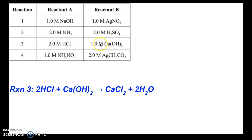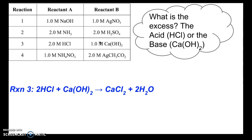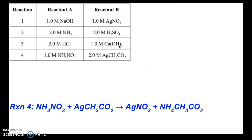For reaction 3, it's also acid-base neutralization, so ask: is the base in excess? Using mole ratios — since volumes are the same, treat molarity as moles — we read 2 moles of acid and 1 mole of base. According to the balanced equation we need a 2:1 ratio of acid to base, and we have exactly 2 moles of acid and 1 mole of base, so neither is in excess. Therefore the solution is neutral and the pH is approximately 7.